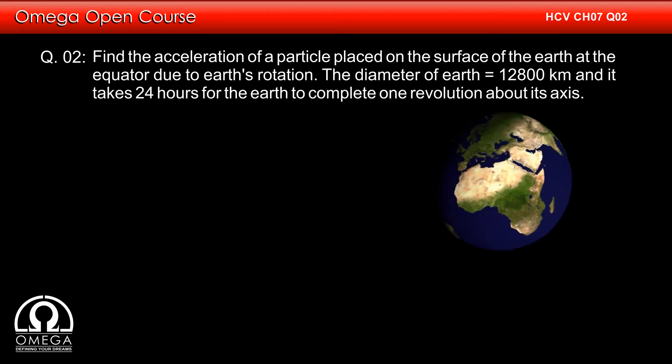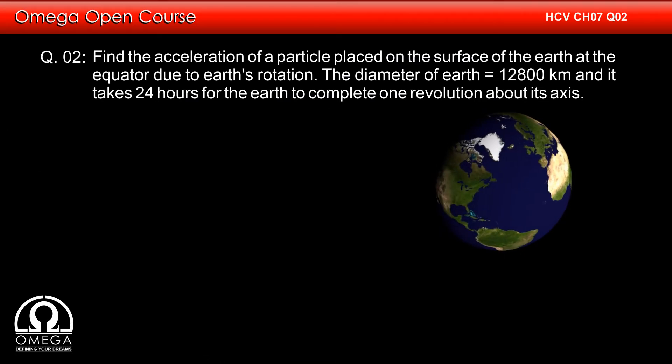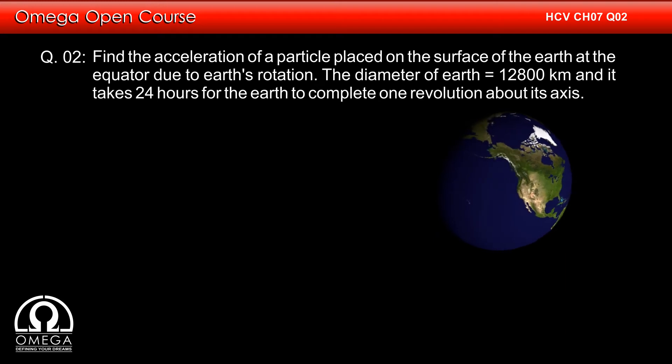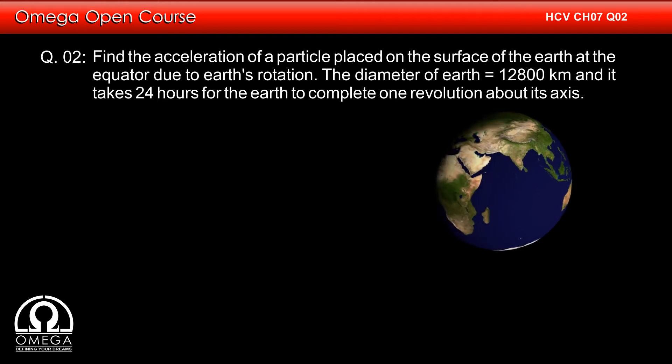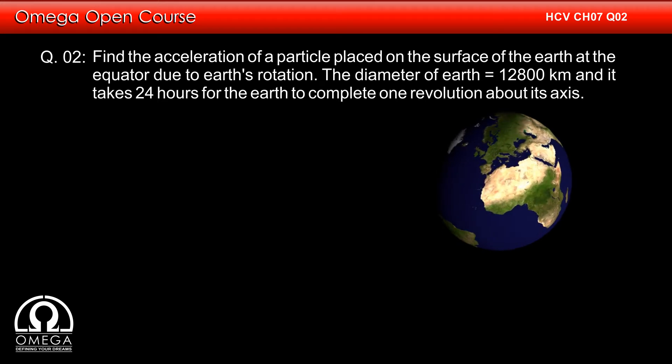Find the acceleration of a particle placed on the surface of the Earth at the equator due to Earth's rotation. The diameter of Earth is 12,800 kilometers and it takes 24 hours for the Earth to complete one revolution about its axis.